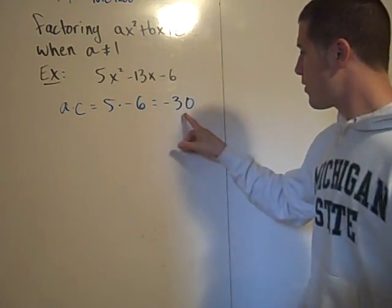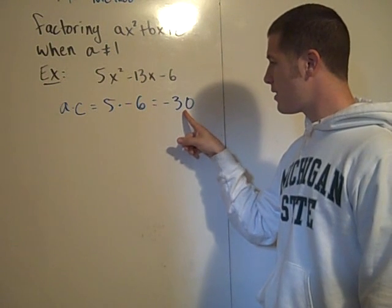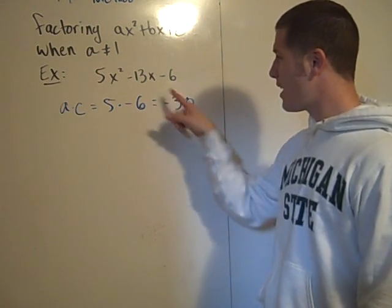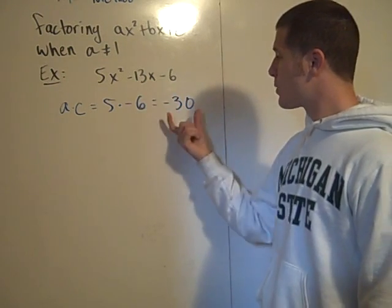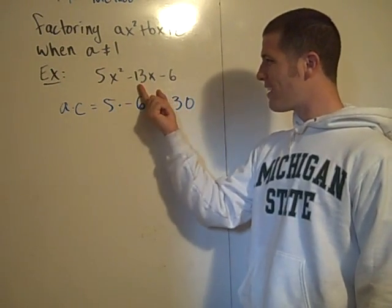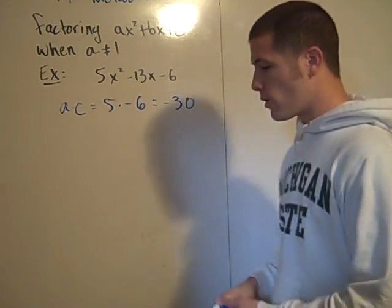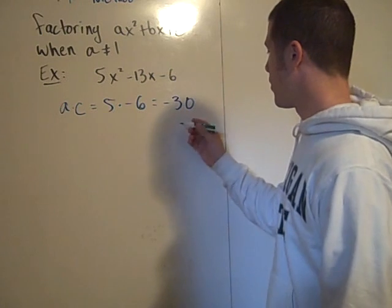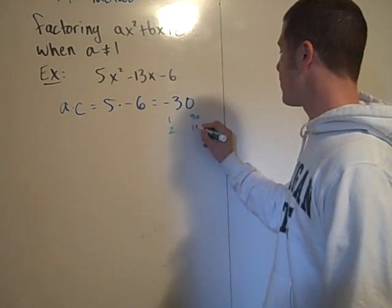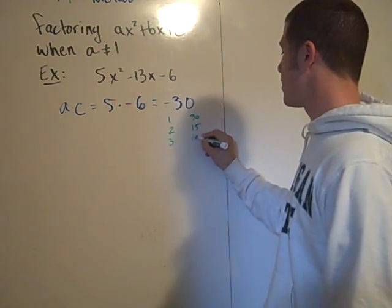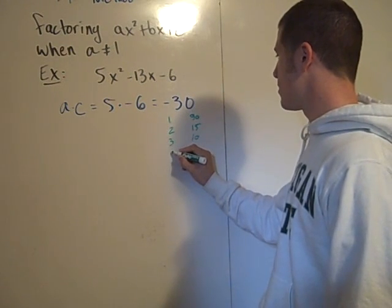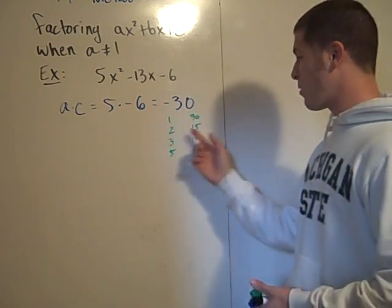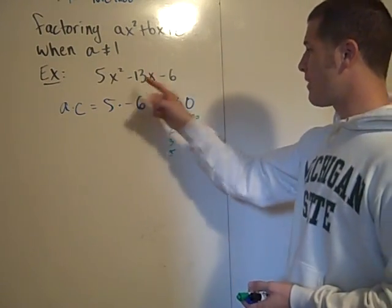We then search for factors of AC, in this case negative 30, that add to b. So we're searching for factors of negative 30 that add to negative 13. So you can think about just making a list of the factors of 30, namely 1 and 30, 2 and 15, 3 and 10, 5 and 6, and that's the best we're going to do. So one of these is going to have to be negative and it's going to have to add to negative 13.